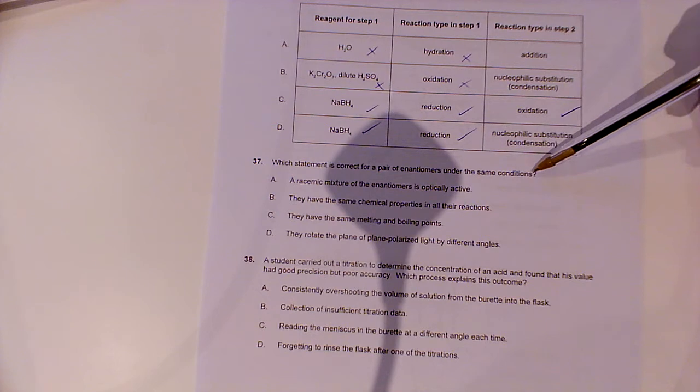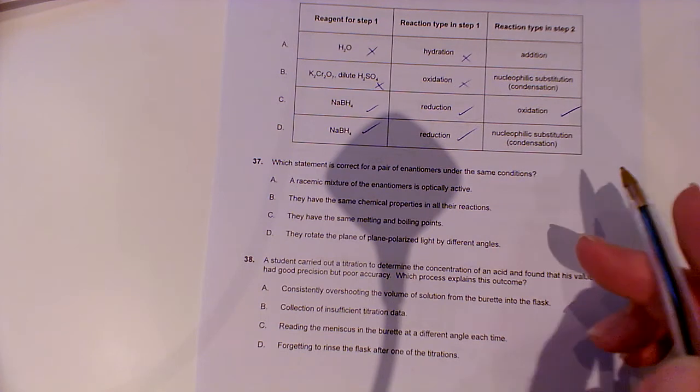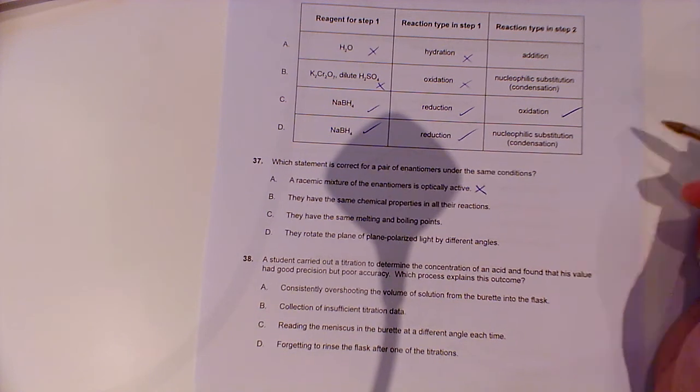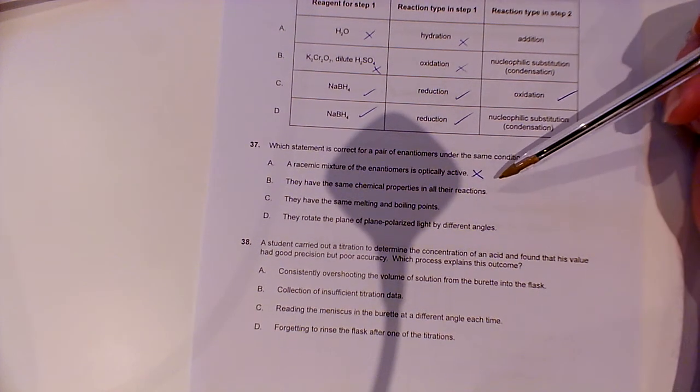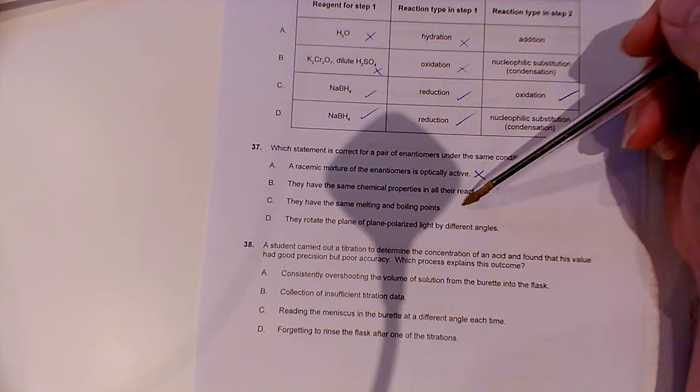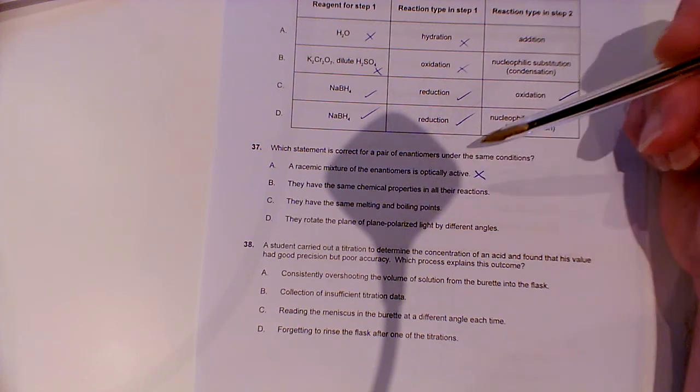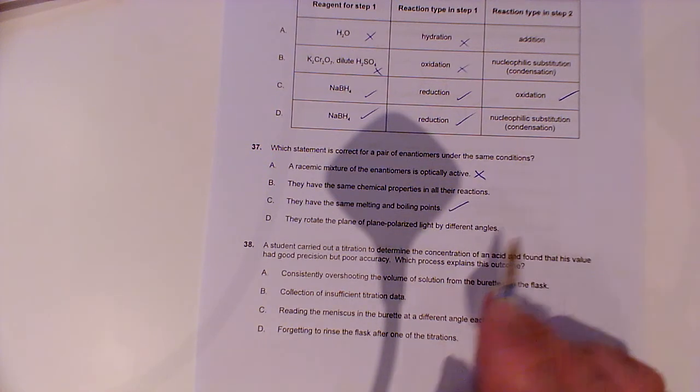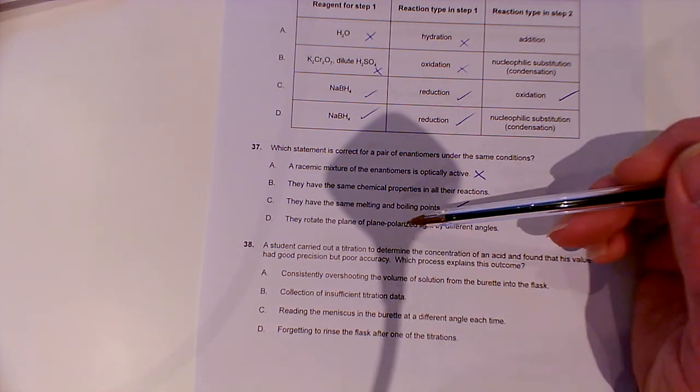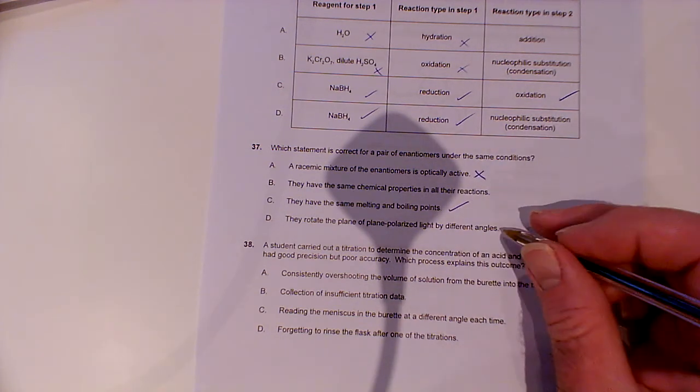Question 37. Which statement is correct for a pair of enantiomers under the same conditions? A racemic mixture of the enantiomers is optically active. Well, a racemic mixture, you've got a 50-50. So the effect would cancel out. Just as much as one rotated anticlockwise, there would rotate it by the same one clockwise. So it would not be optically active. They have the same chemical properties in all their reactions. Well, they do behave very similarly, and that doesn't sound like a bad answer. But let's have a look at some of the others. They have the same melting and boiling points. Well, that is correct. It's very difficult to separate enantiomers because they have identical physical properties. So that's looking pretty good. They rotate the plane polarized light by different angles. Well, not if you get the same concentration of each of them.